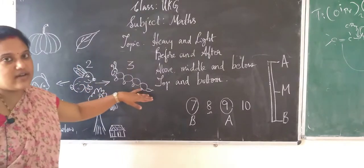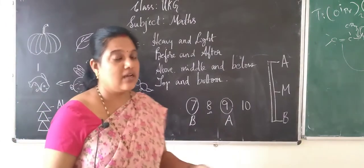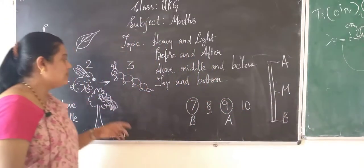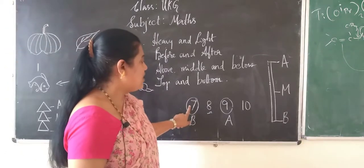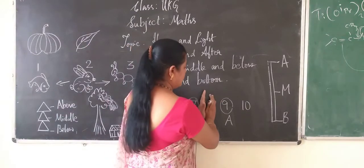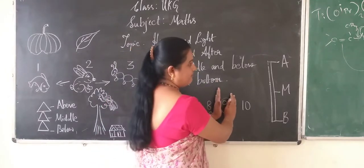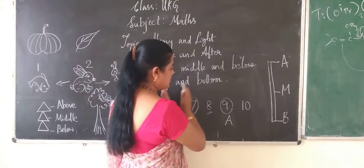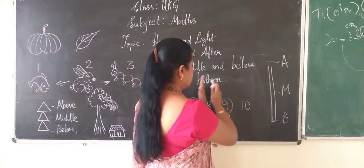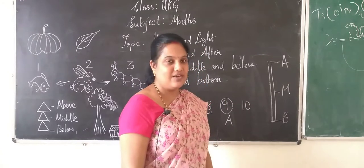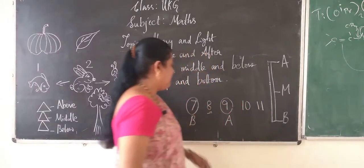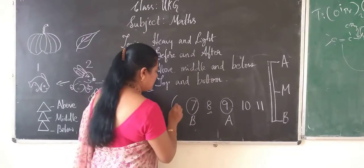Before means what comes in front, and after means what comes next. Now look at the numbers 7, 8, and 9. Here 8 is in the middle — 7 is before 8, and 9 is after 8. If you take 8, 9, and 10: 9 is in the middle, 8 is before, and 10 is after. After 10, what number comes next? That's 11. And before 7, what number comes? That's 6.